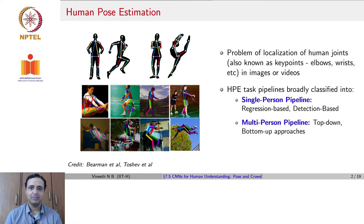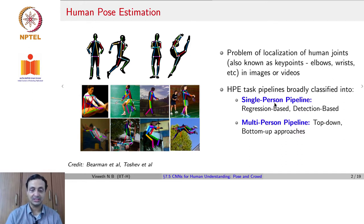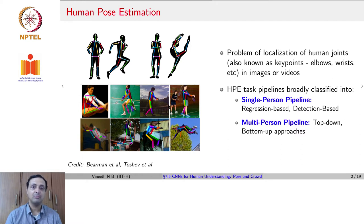Existing deep learning based methods for human pose estimation are broadly categorized into single person pipelines, where you are trying to get the pose of just a single person in the frame, or a multi-person pipeline, where there could be multiple people in the frame and you would like to know the pose of each of them.